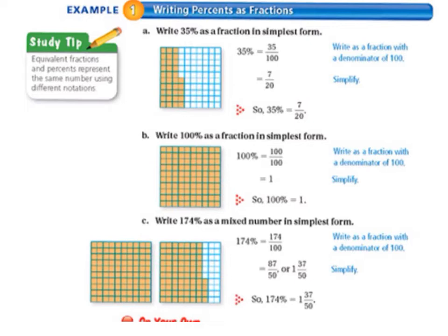Example 1, we'll be writing percents as fractions. Letter A: write 35% as a fraction in simplest form. So 35% equals 35 over 100. We write the fraction with a denominator of 100, and then we simplify it. We divide the top and the bottom by 5, because that's the greatest common factor of 35 and 100, and that equals 7 twentieths.